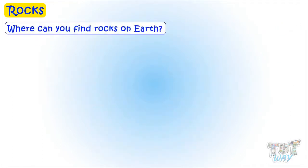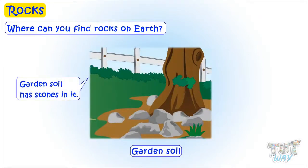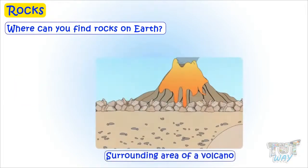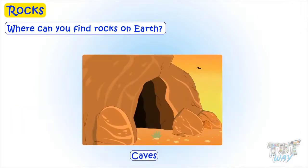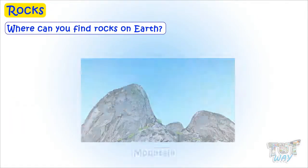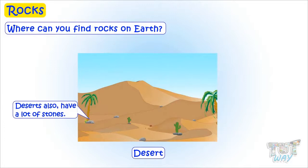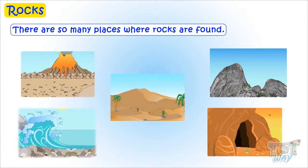Where can you find rocks on earth? You will find rocks on most of the places on earth. Here are a few examples: beaches have big stones, garden soil has stones in it, seabed has a lot of stones, surrounding area of a volcano has stones, caves are made up of stones, you can find big stones on mountains, and deserts also have a lot of stones. So there are just so many places where you can find rocks.